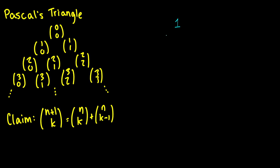We get: 0 choose 0 is 1; 1 choose 0 is 1 and 1 choose 1 is 1; 2 choose 0 is 1 and 2 choose 2 is 1. What is 2 choose 1? What's cool here is that if we add the two upper diagonal entries together we get that result. So 3 choose 0 is 1. What is 3 choose 1? Well if we add 1 and 2 together we get 3. And 3 choose 2 — we saw that n choose k equals n choose (n minus k), so 3 choose 1 is the same as 3 choose 2.